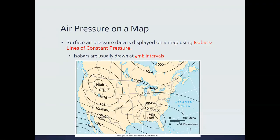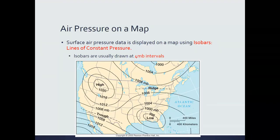One other thing to mention about isobars: to simplify the map, we only plot isobars for every four millibars. So we don't plot one for 1000, 1001, 1002, 1003 — that would make the map a lot harder to read. Instead, we just go 1000, 1004, 1008, 1012, 1016, and so on. So we go every fourth millibar.